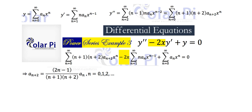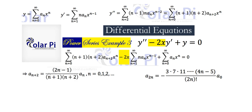I'll start with the even coefficients. All of the even coefficients, except for a sub 2, can be found using this formula. A sub 2 you can find by plugging n equals 0 into the recursive definition. All of the other even coefficients can be expressed in terms of a sub 0 using this formula, and a sub 2 is also in terms of a sub 0 — if you plug in n equals 0, you get a sub 0 on the right side.